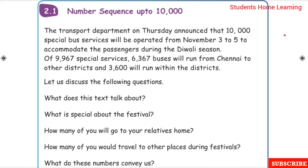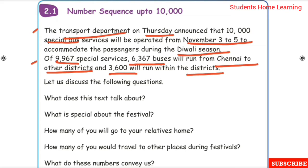Unit 2 Numbers, Number Sequence up to 10,000. The Transport Department announced that 10,000 Special Bus Services will be operated from November 3 to 5 to accommodate passengers during the Diwali Season. Of 9,967 Special Services, 6,367 Buses will run from Chennai to other districts and 3,600 will run within the districts.